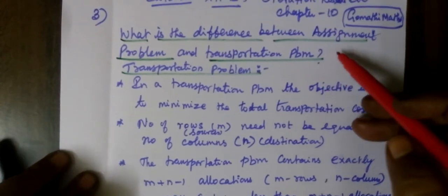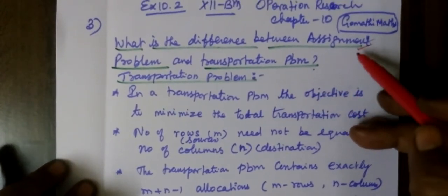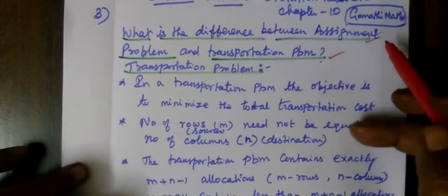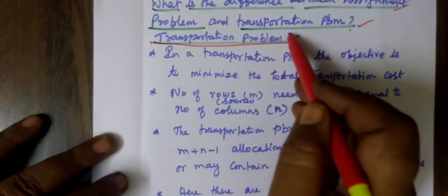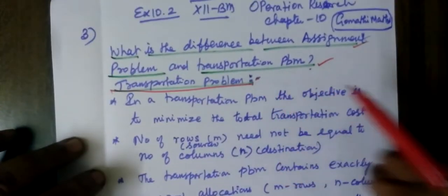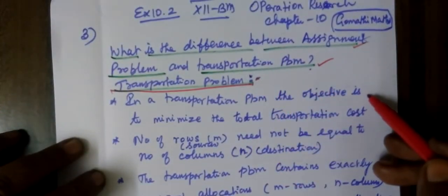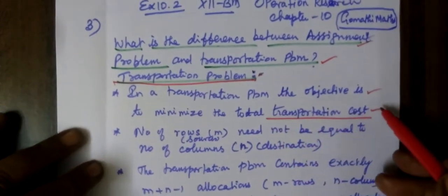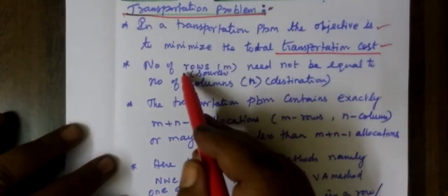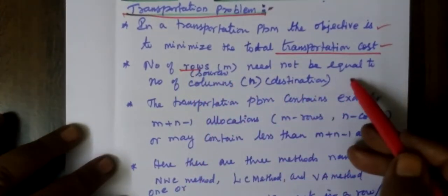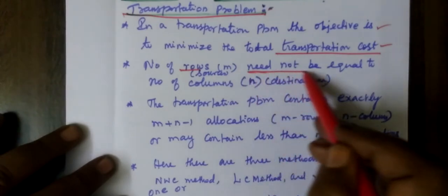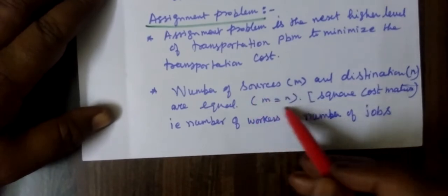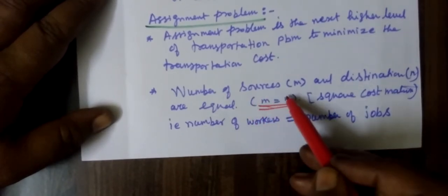Now coming to the third question: what is the difference between assignment problem and transportation problem? In transportation problem, the number of rows and columns need not be equal. Whereas in assignment problem, the number of rows and columns are equal.